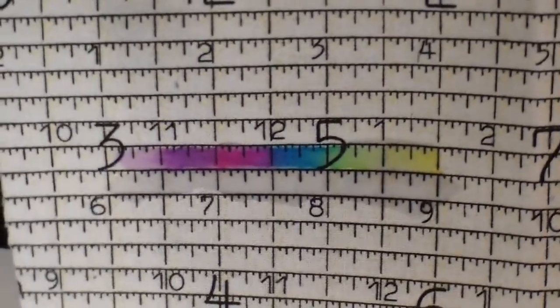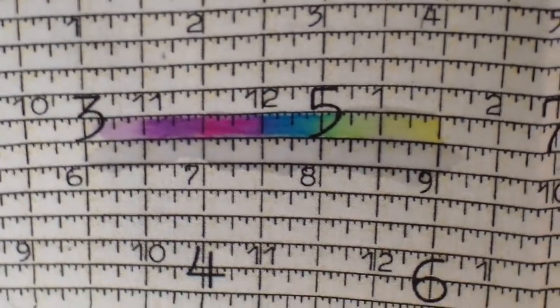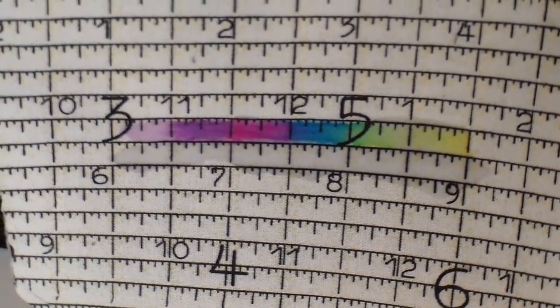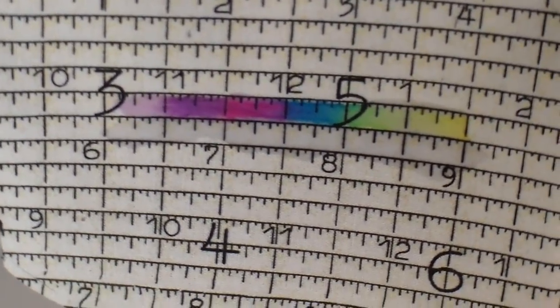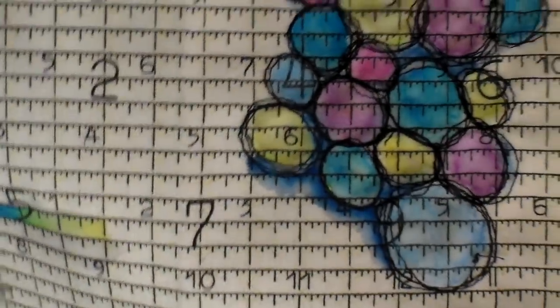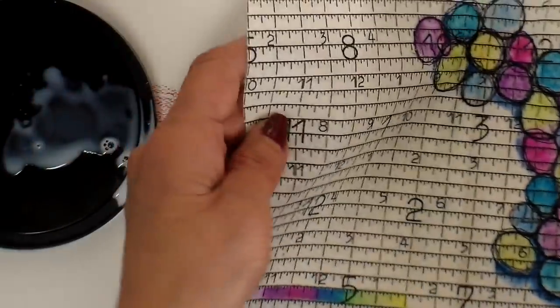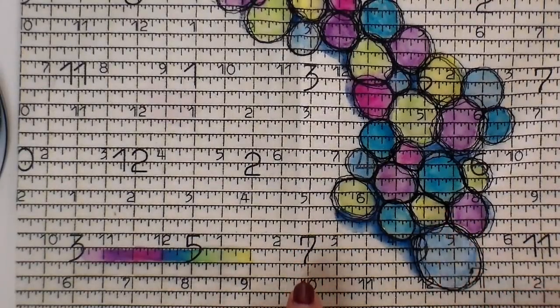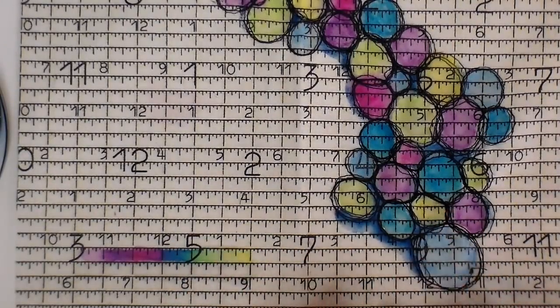There you can see I added the color and then took the fabric medium over the top of all of them and blended them together. Next, I will be ironing this just to heat set that color.